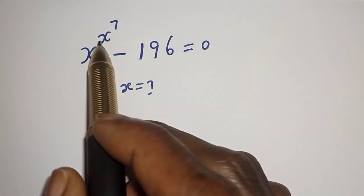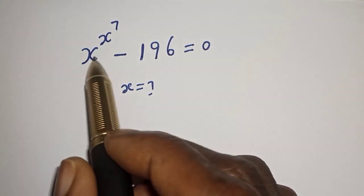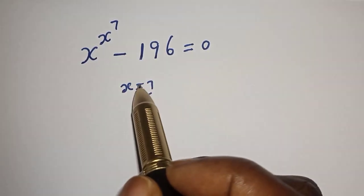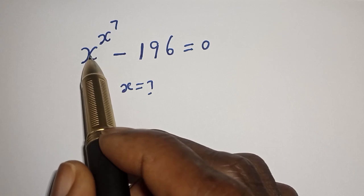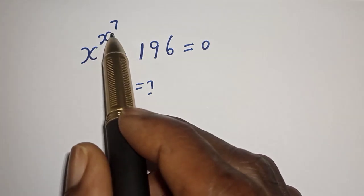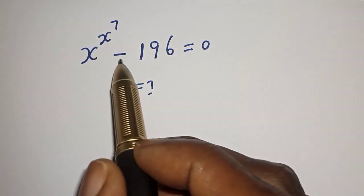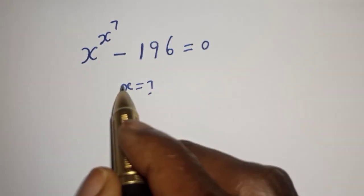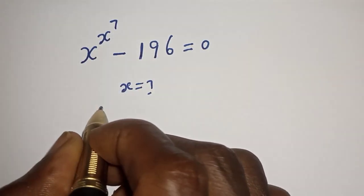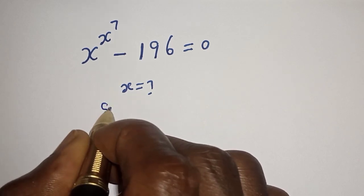Hello, welcome to Math G's. In this class, I want to find the value of S from this equation: S raised to power S raised to power 7 minus 196 is equal to 0. Solution.